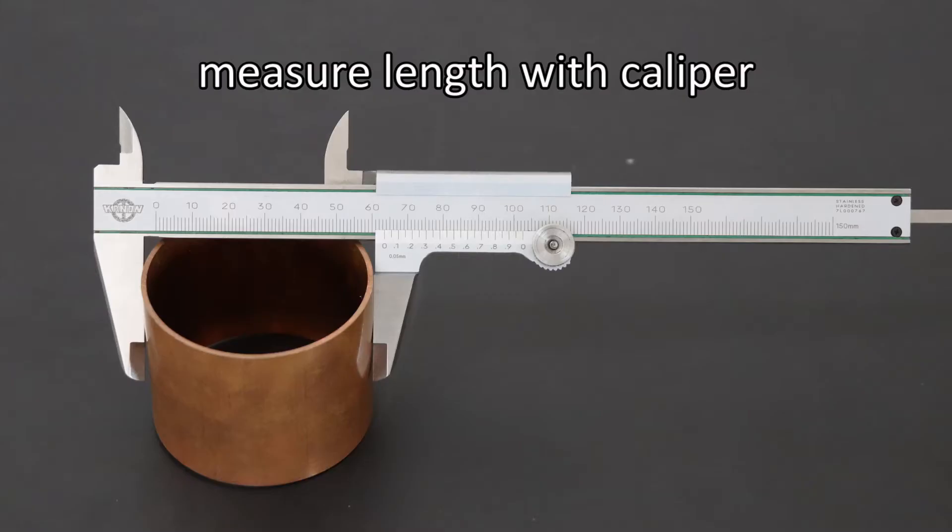The caliper is used to measure length. Place the object to be measured between the outer jaws, as shown in the screen. Using the scale on the caliper, you can measure the length of the object.